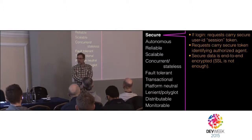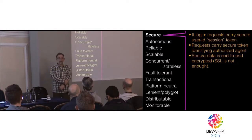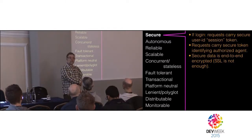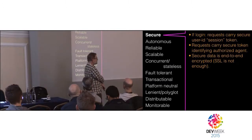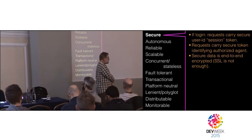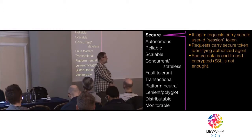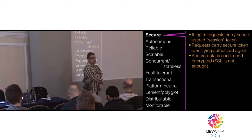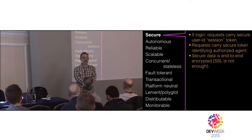A microservice has to have, to be functional, a whole set of important characteristics. The first one is security: simply making a REST call to a remote server is not secure. SSL does not give you security. We want to make sure that nobody can call our service who is not authorized to call it.